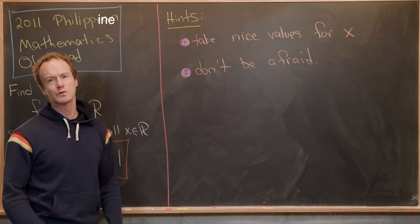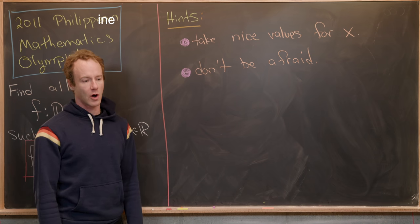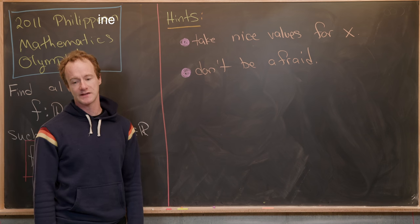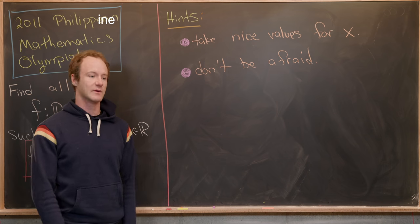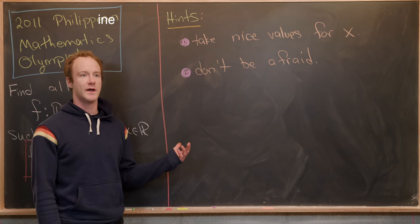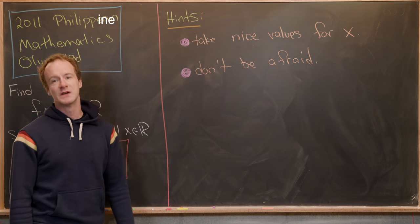My first hint is really typical for all functional equation type problems, and that's to take some nice values for x and then just play around with it. So what are nice values? Well, I would say x equals 0, 1, 2, negative 1, so on and so forth.